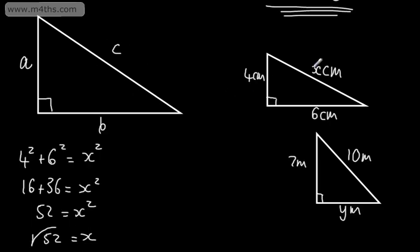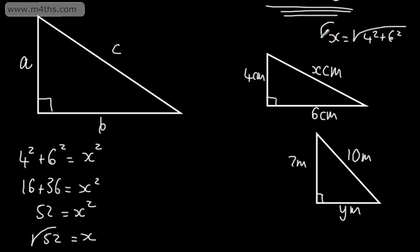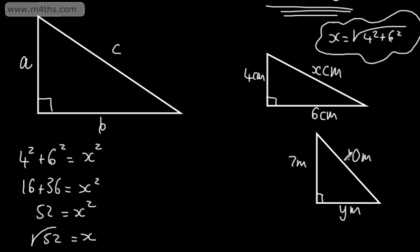If you wanted a quicker way to do it, you could simply write that X was equal to the square root of 4 squared plus 6 squared. You must, though, check what level of working you're expected to show in the questions that you're answering.